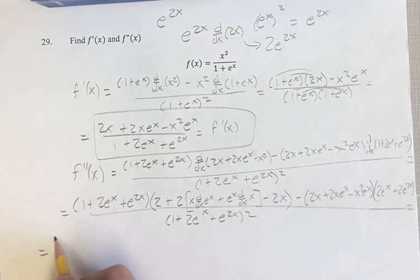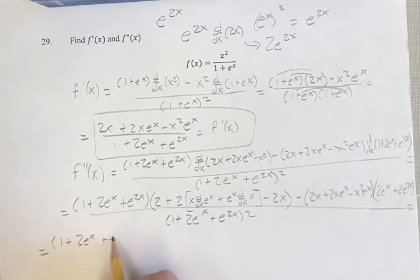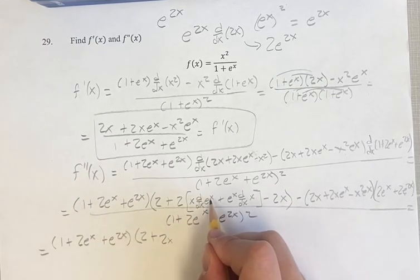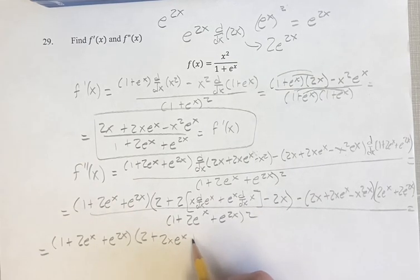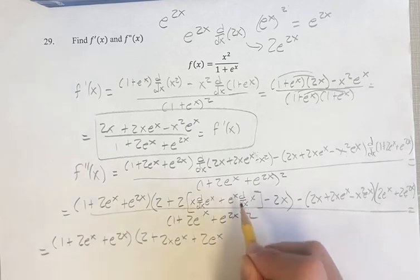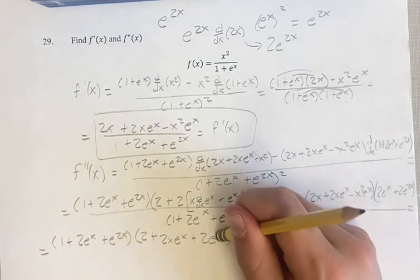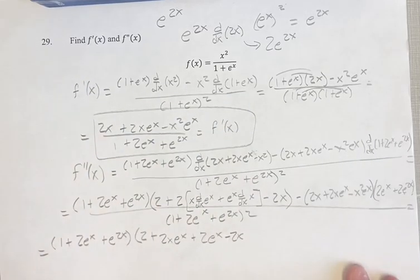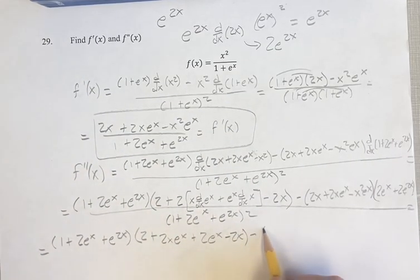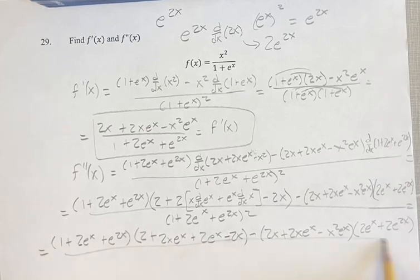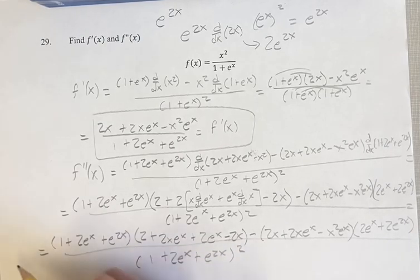Writing this out one final time: we have (1 + 2eˣ + e^(2x)) times (2 + 2x·eˣ + 2eˣ), minus (2x + 2x·eˣ − x²·eˣ) times (2eˣ + 2e^(2x)), all over (1 + 2eˣ + e^(2x)) squared. This is your second derivative.